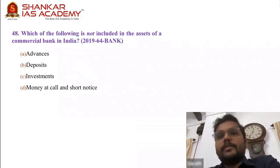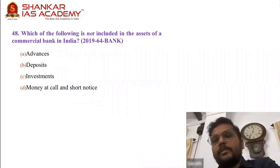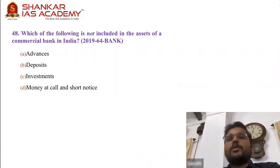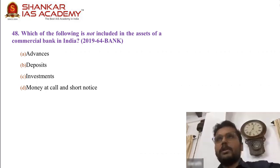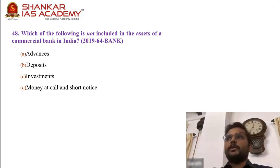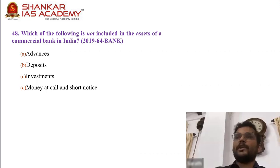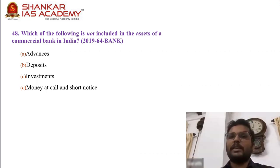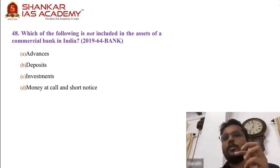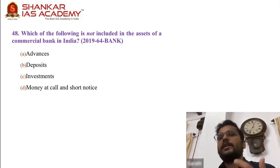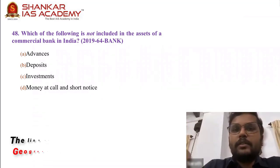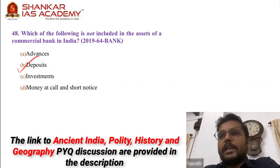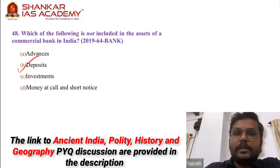Question 48: Which of the following is not included in the assets of a commercial bank in India? Instead of asking which is not an asset, you can look at it as which is a liability of a bank. Asset is something with potential to earn money — when you give a loan, you earn money. When you take a deposit, you are effectively taking a loan — that is a liability. Deposits are the liabilities of a bank. The answer is B — deposits. This is an application question, expected of everyone to answer.